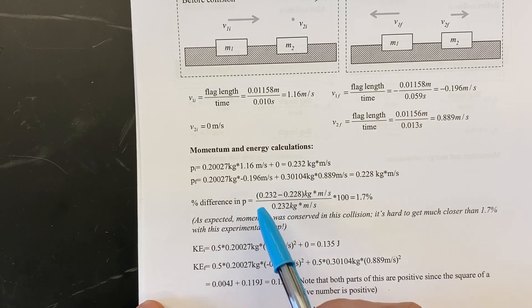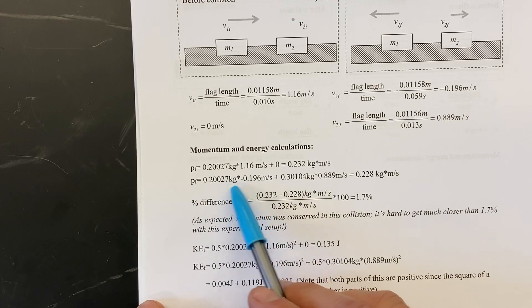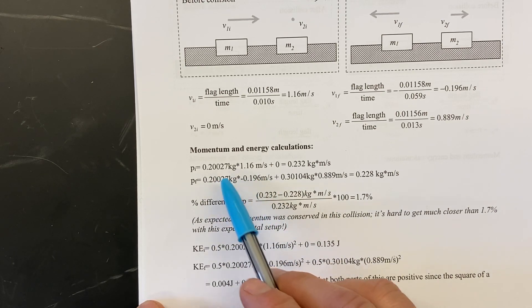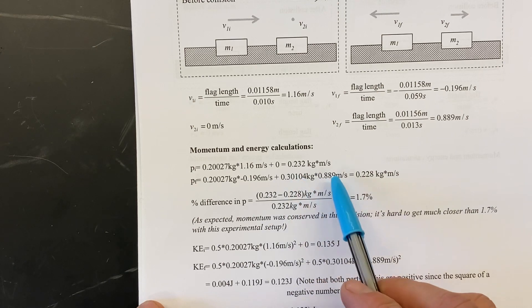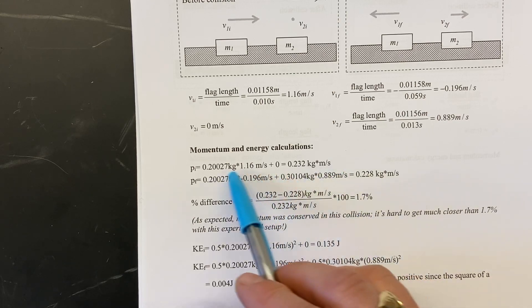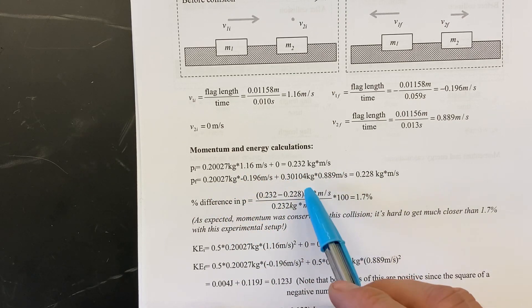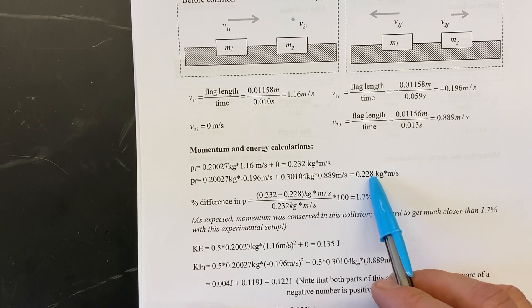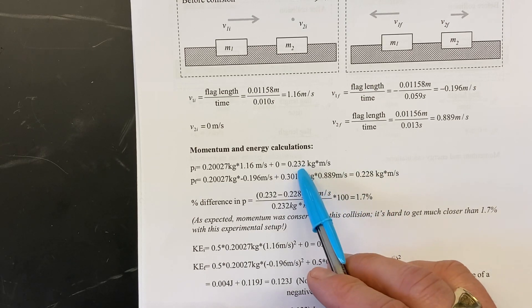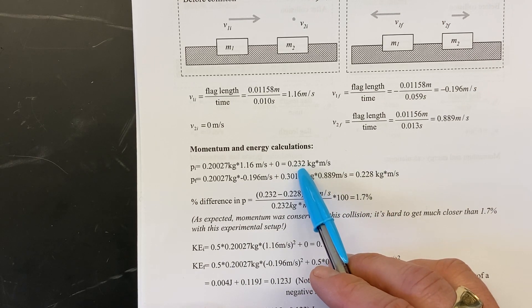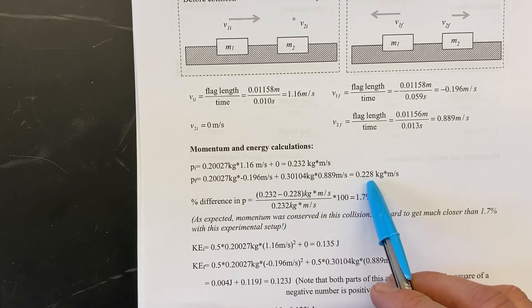In the final state, we had glider one moving to the left so it has this negative momentum and glider two, the bigger mass, was moving to the right at this speed. Okay, it had a positive velocity and then overall the momentum of the whole system was this value. So before the collision it was 0.232 kilogram meters per second, afterward 0.228 kilogram meters per second.